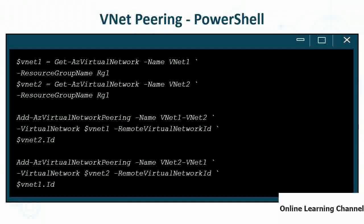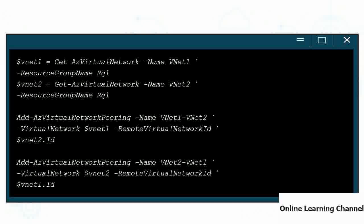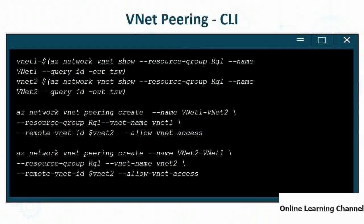VNet peering can be enabled using GUI tools like the Azure portal, or through PowerShell. In PowerShell, create variables for each VNet using 'Get-AzVirtualNetwork', then use 'Add-AzVirtualNetworkPeering' specifying the name of the peering connection, the source VNet, and the remote virtual network ID. The peering must be created in both directions — from VNet1 to VNet2 and from VNet2 to VNet1.